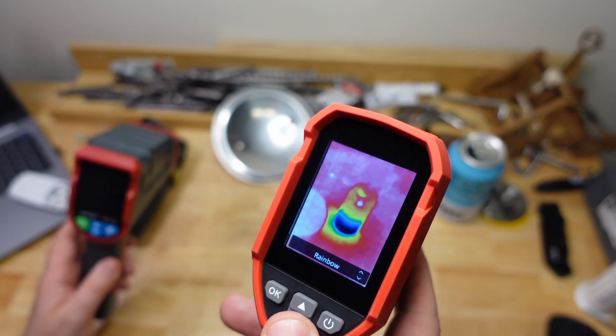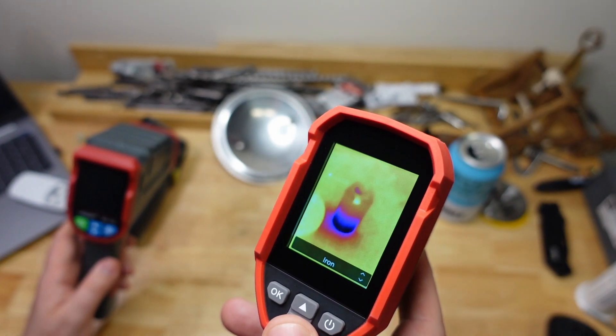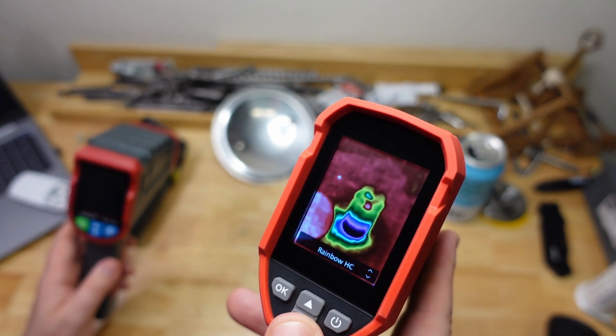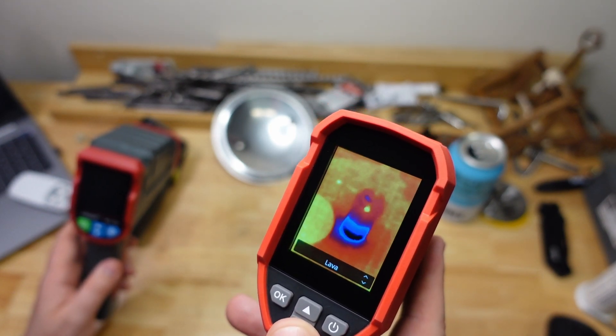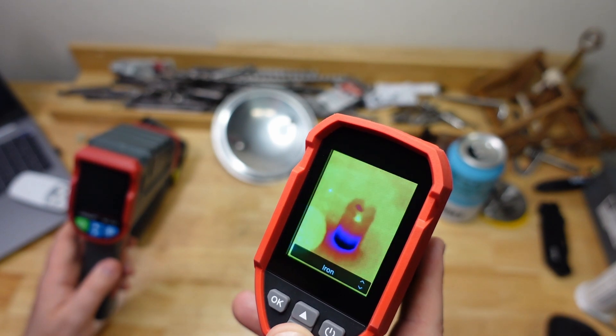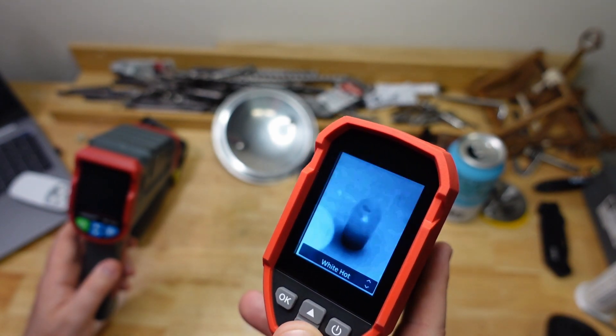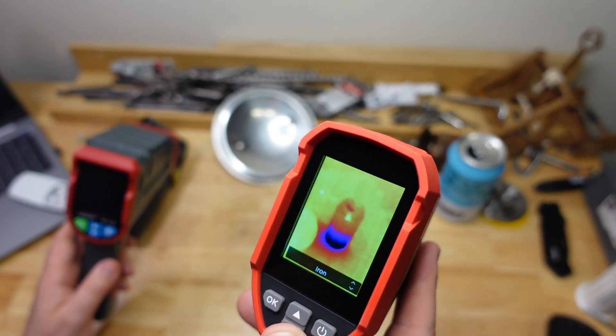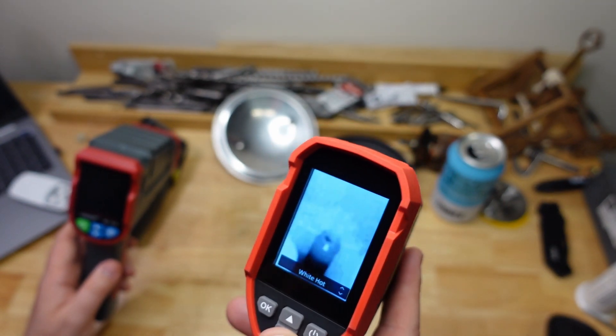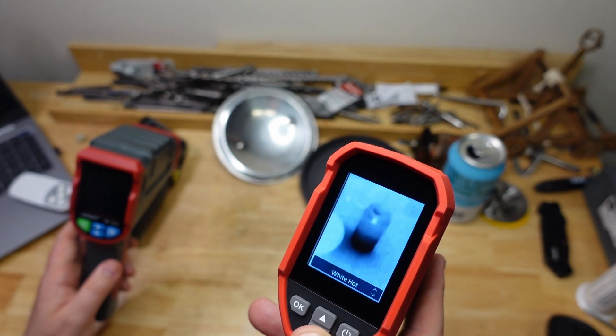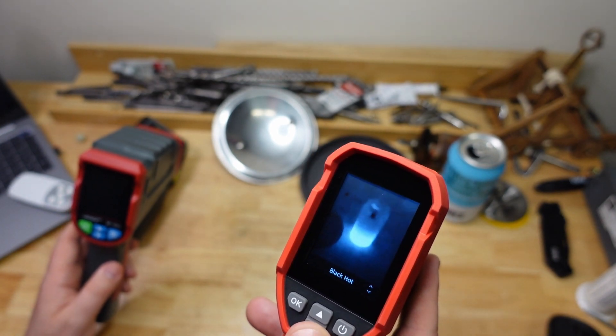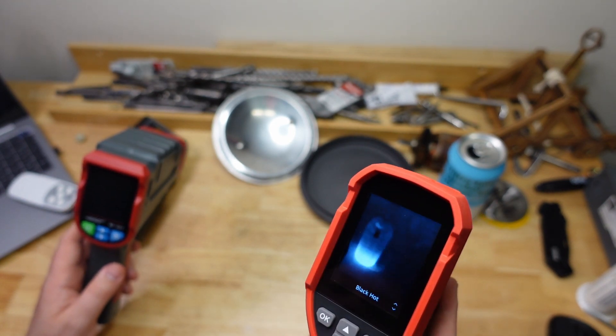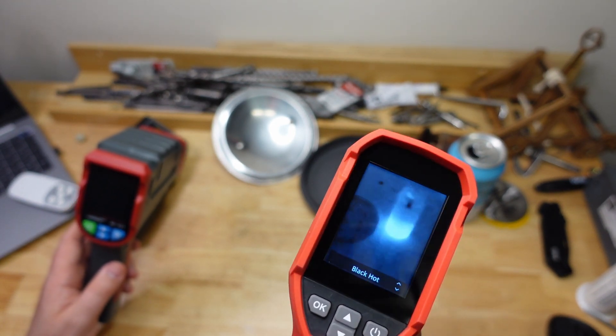So something else you might want is different color palettes as well. So this one has the standard kind of color palettes where that's lava, rainbow, iron, white hot, black hot, rainbow. So, yeah. So, like, having different palettes does help. Helps you highlight different things. So that's actually the cold is the brightest. You know, that kind of thing is pretty handy too. They don't all have that.